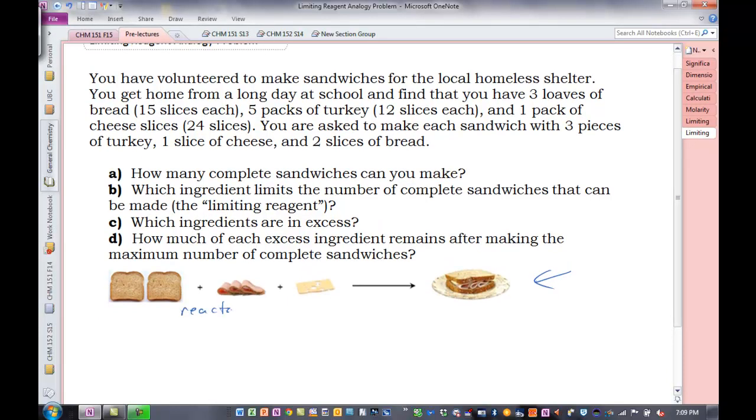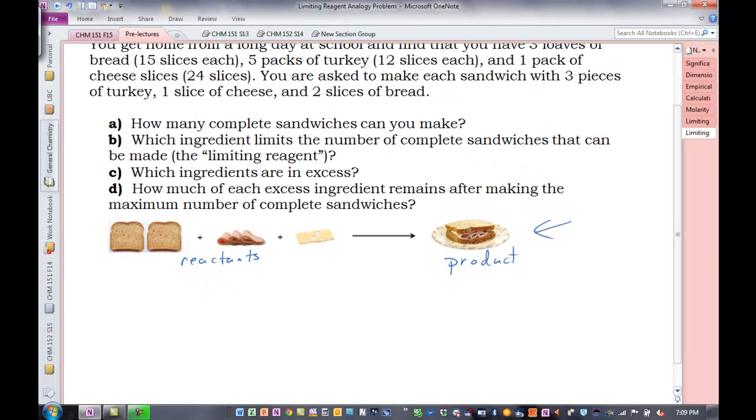Here are our reactants, and here is our product, the sandwich. One of our ingredients, one of our reactants, is going to run out first. We need to find out which one. Now, this is something you are familiar with. You could probably look at the numbers and figure this out, but let's set it up like we would do a limiting reagent calculation. And if you look at my prior videos, I like to treat each reactant separately.